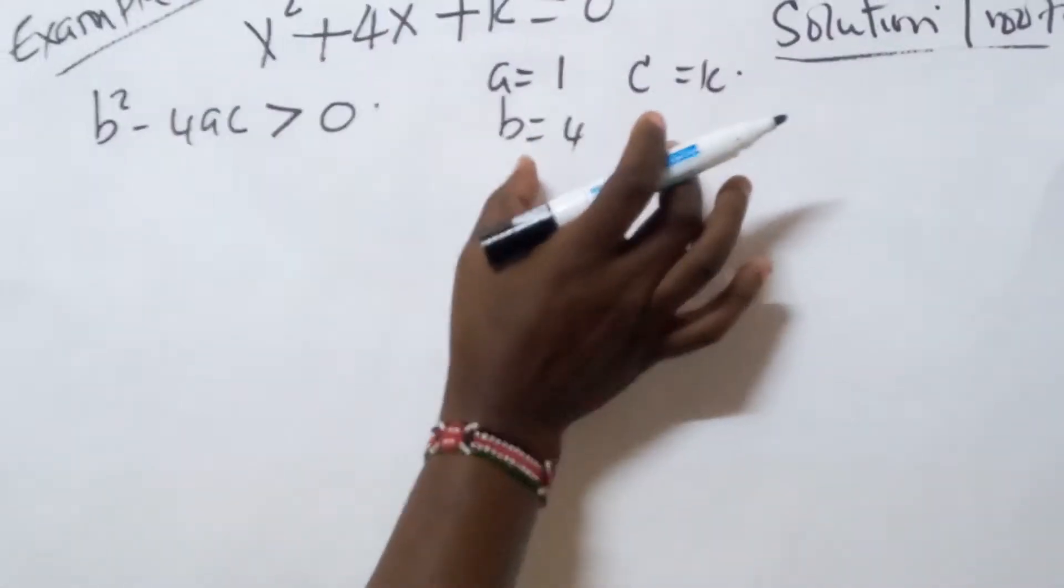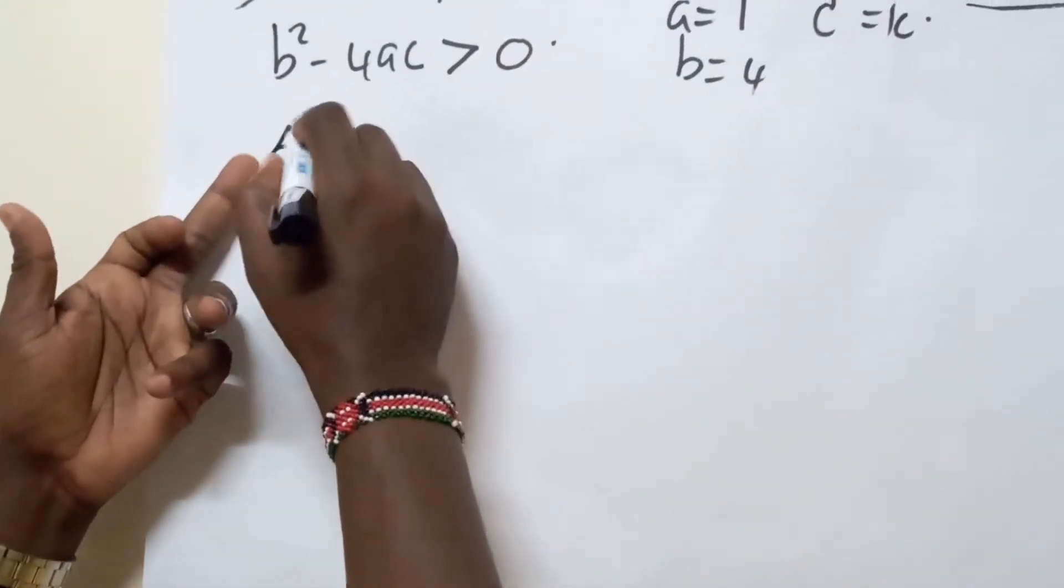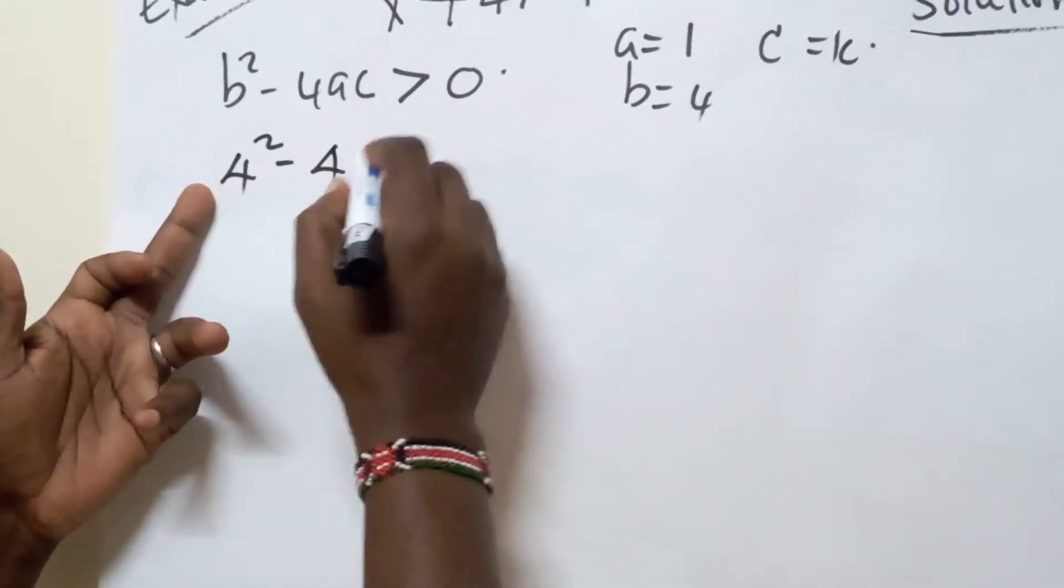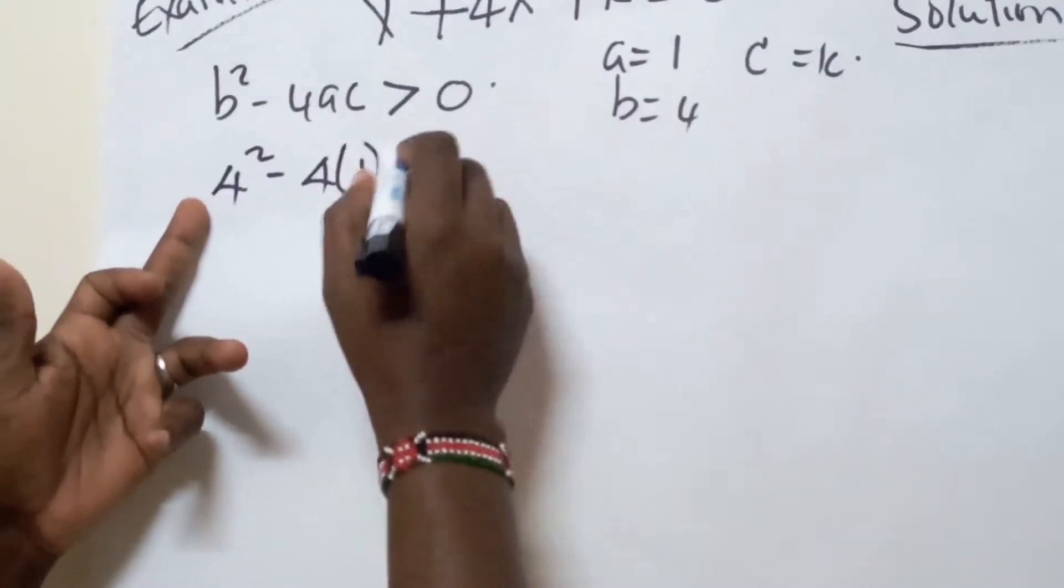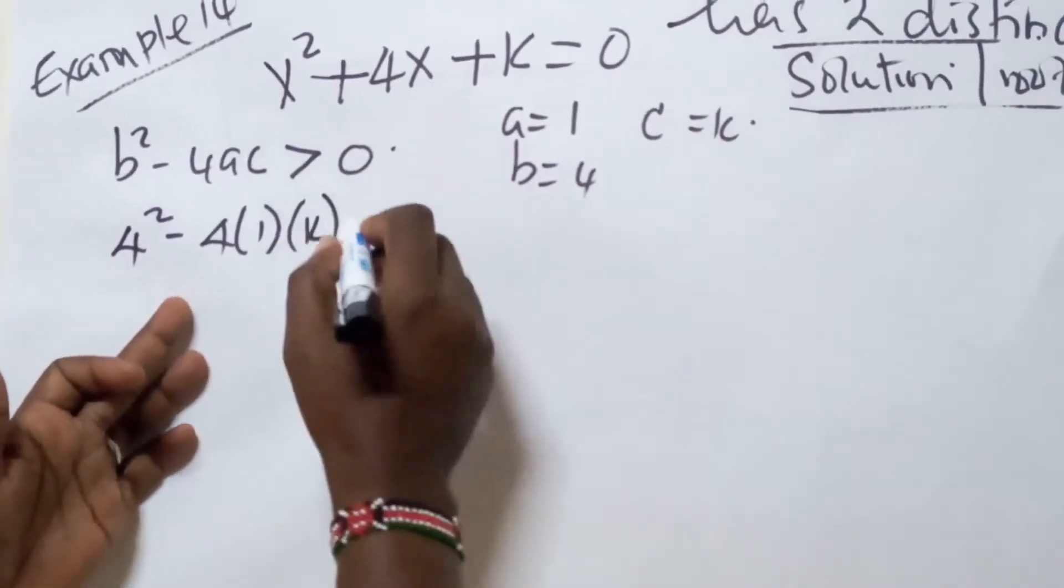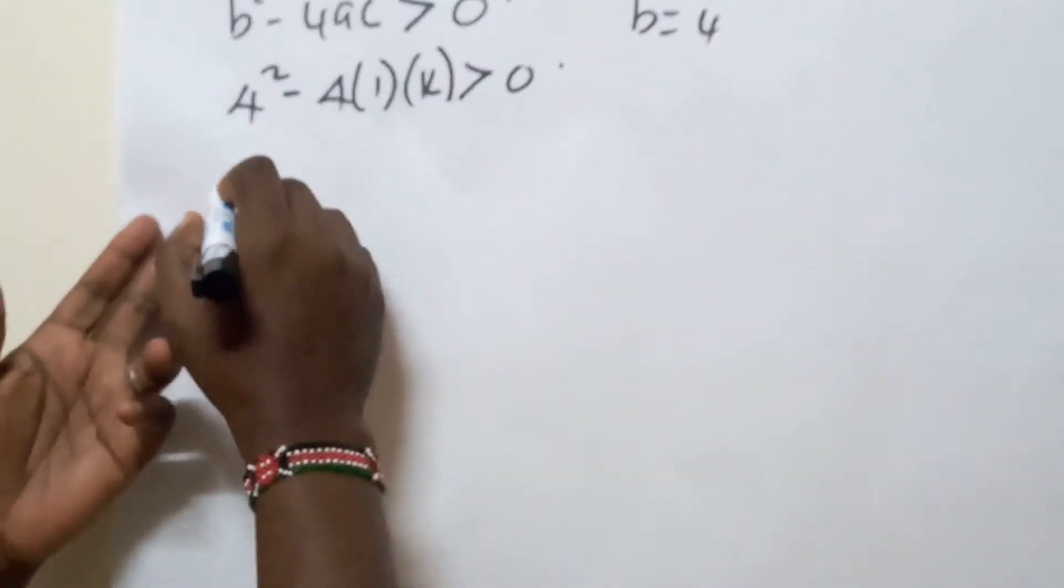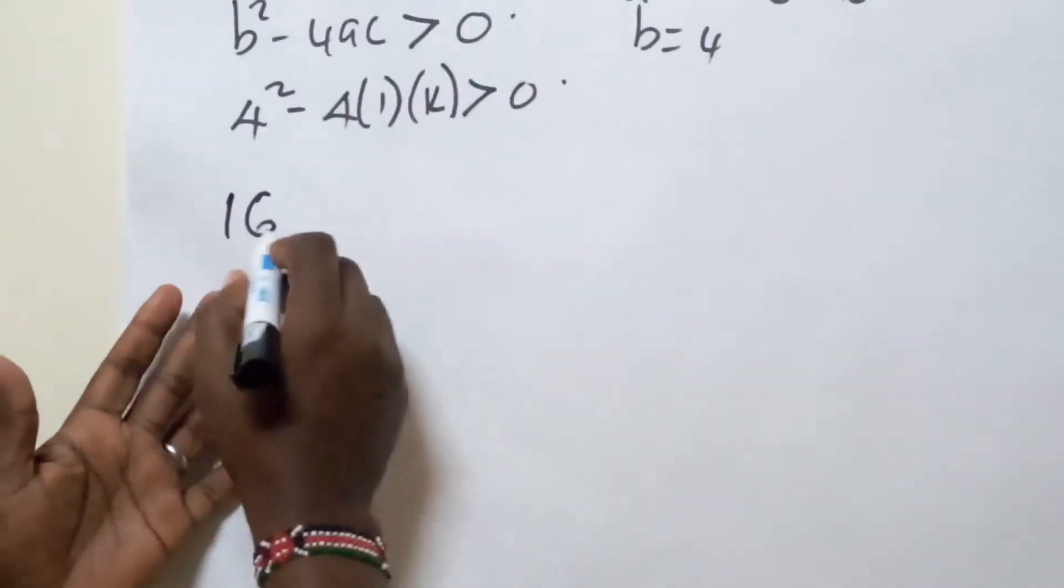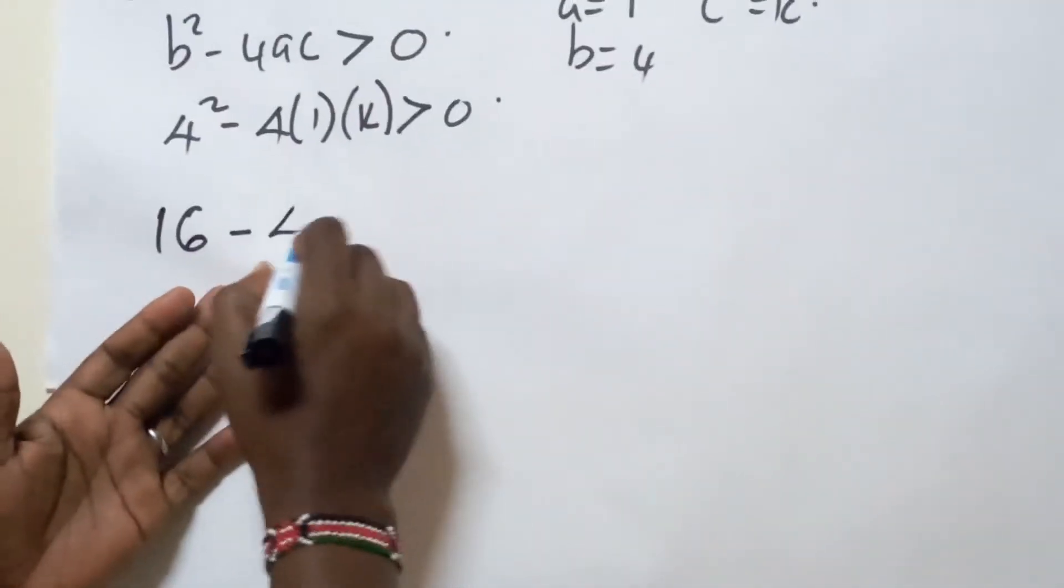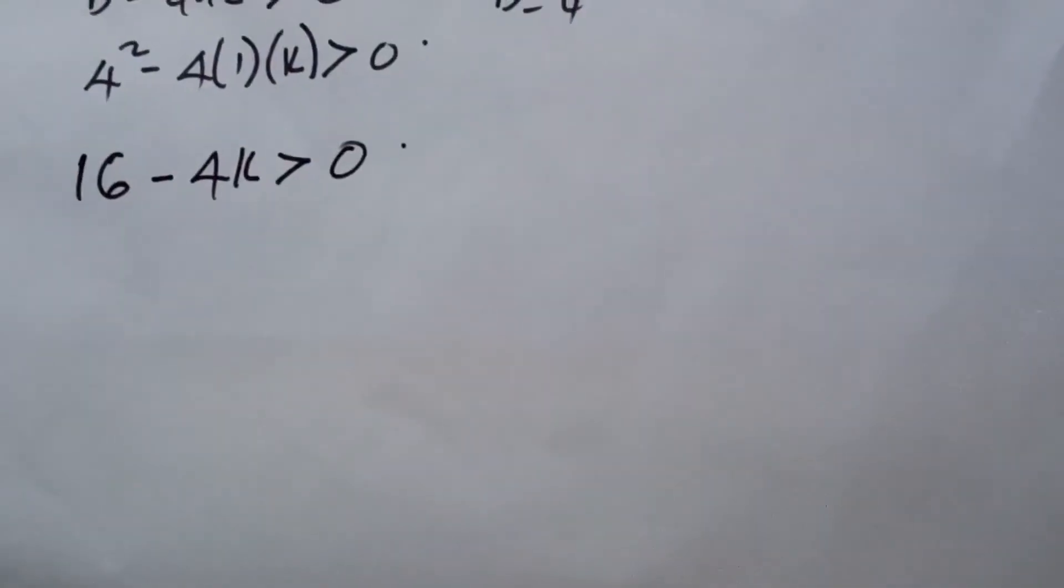So let us substitute all these here and have our b, which is 4 squared minus 4 times 1 times k, which is c. All of these put together have to be greater than 0. What is this giving us? 16 minus 4k has to be greater than 0.